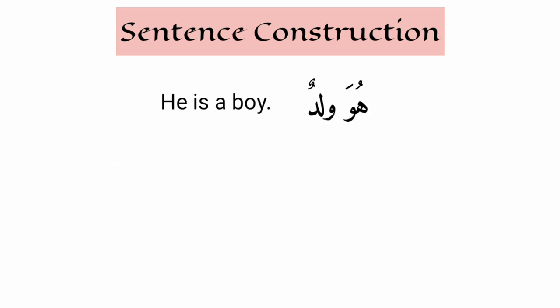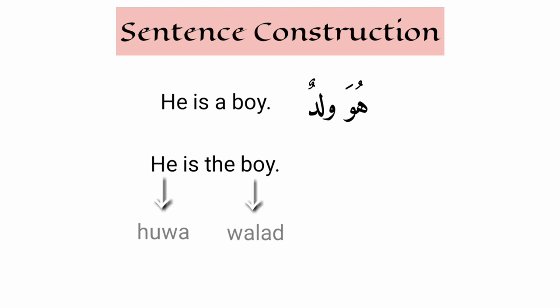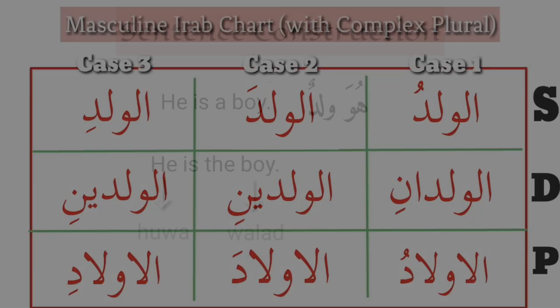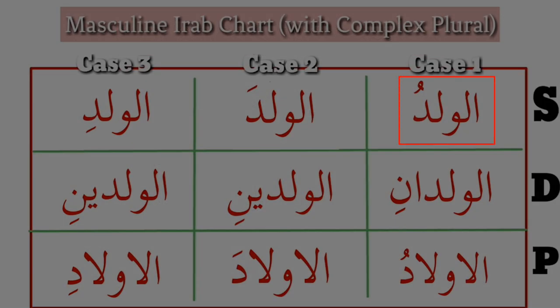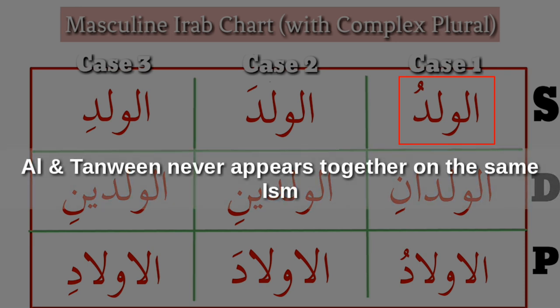He is a boy — huwa waladun. But how will you translate 'he is the boy'? He is huwa, and the boy is al-walad. The case one for al-walad is al-waladu. Remember the rule: al and tanwin never appear together on the same ism. This is one of the most absolute rules in Arabic. Whenever al is used on a word, tanwin will not be used.